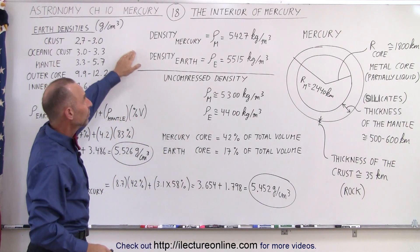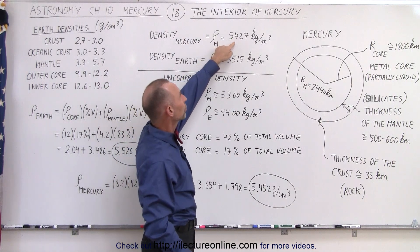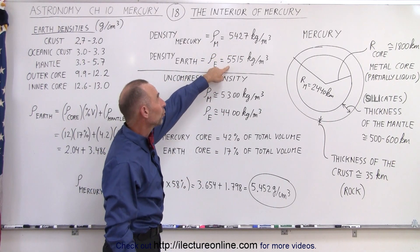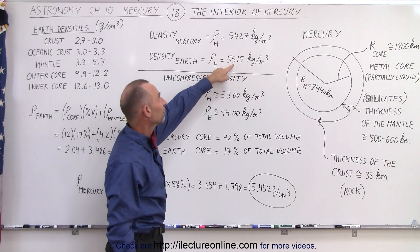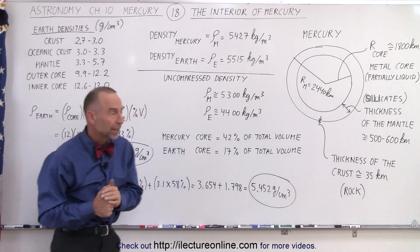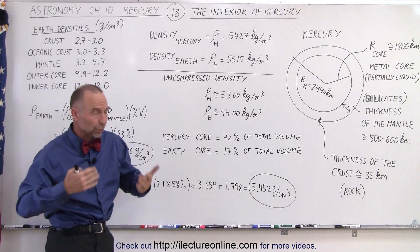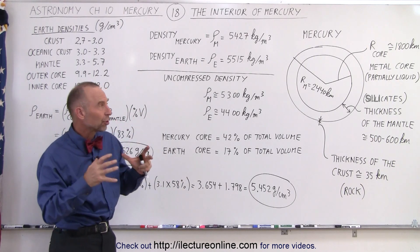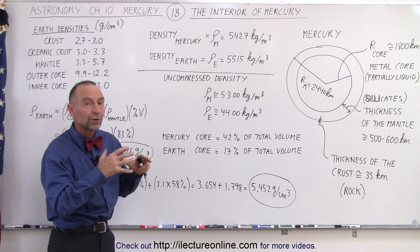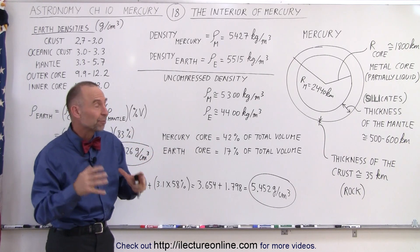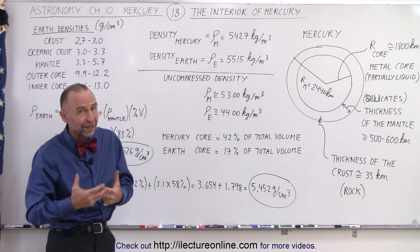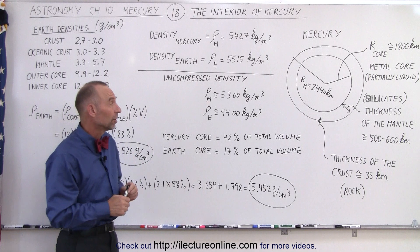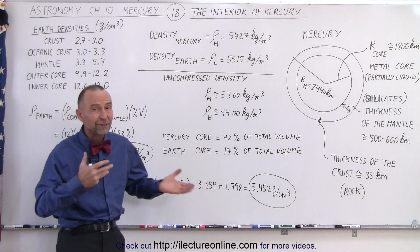Now the density of the planet is 5427 kilograms per cubic meter, compared to the Earth, which is 5515 kilograms per cubic meter. We suspect that the percentage of the interior that's metal in Mercury is far greater than the percentage of metal in the Earth. We assume that it's close to about 70 percent metal and about 30 percent rock in mass, compared to the Earth which is more like 50/50.